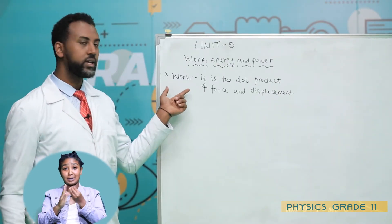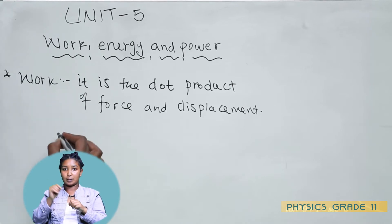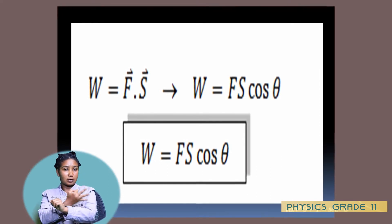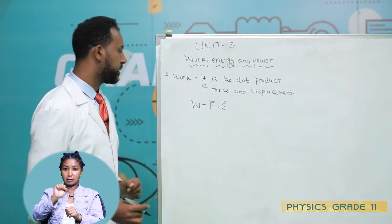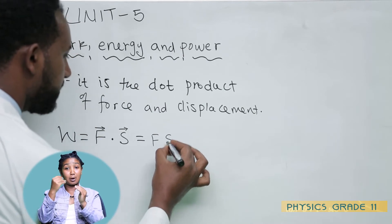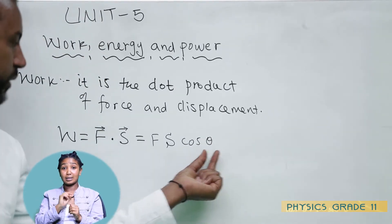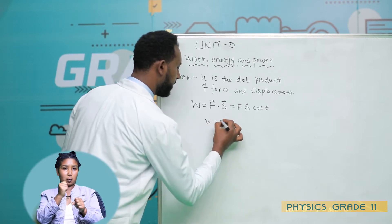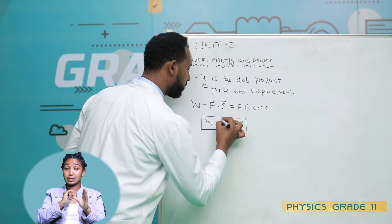Therefore, work is a product of two vectors — force and displacement. Symbolically, work equals force dot S, where F is force and S is displacement. When we determine the magnitude, it is the magnitude of force times the magnitude of displacement times cosine of theta, where theta is the angle between the force and the displacement. It's possible to find work as F·S·cosθ. Never forget — the angle is always between the force and displacement.